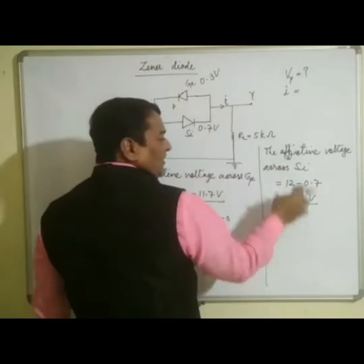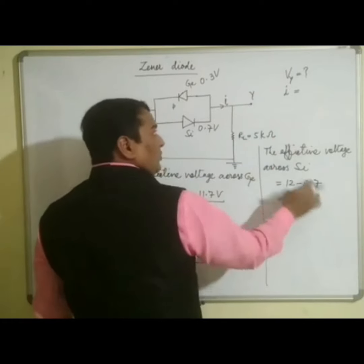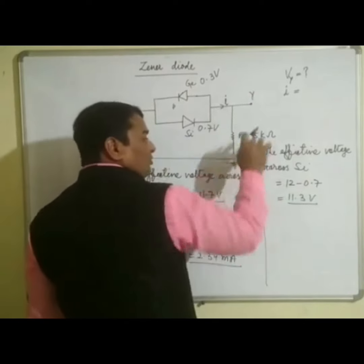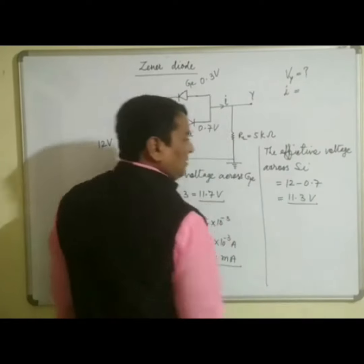Now in second case, the potential at Y is 11.3 volt. And this is at 0, so output is also 11.3 volt.